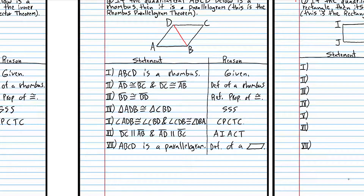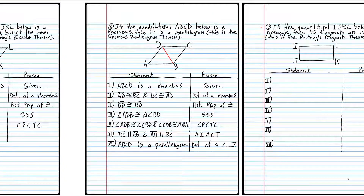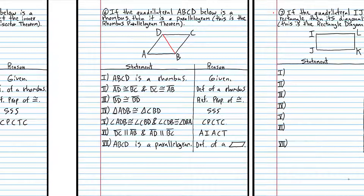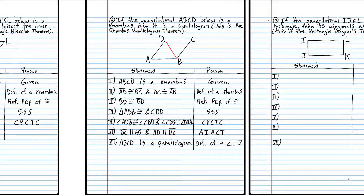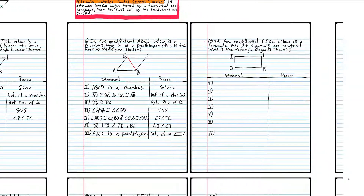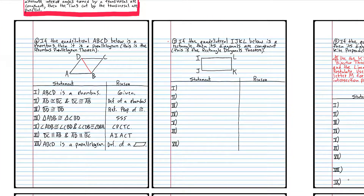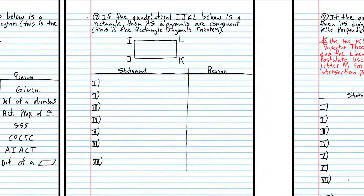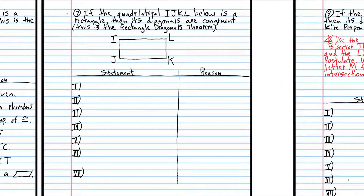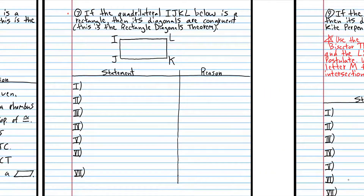If you got something similar to that, good job. If you got a little confused by the order of the lettering — these are isosceles triangles, so it's a little weird to consider the order. For the next problem I don't have an example for you to do; we're going to do it together. There's going to be a problem like this in the homework involving the diagonals of a trapezoid.